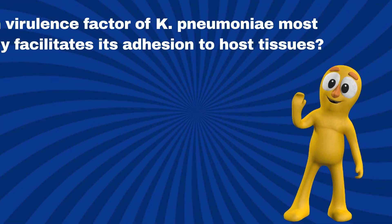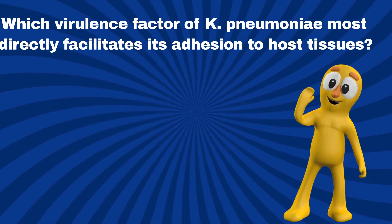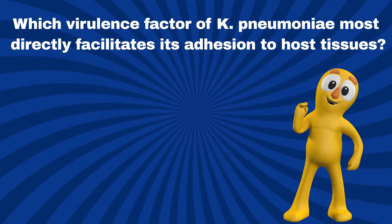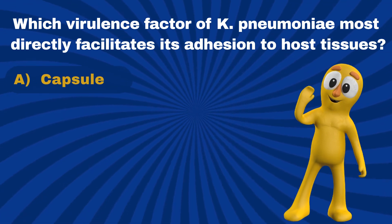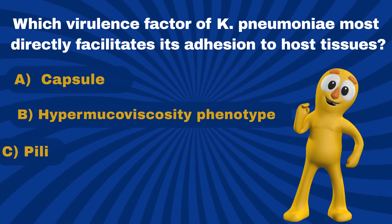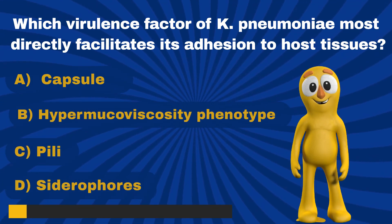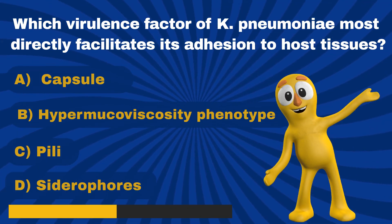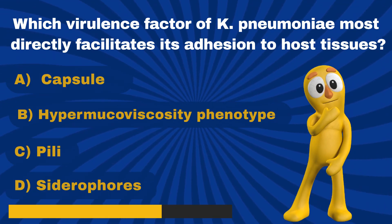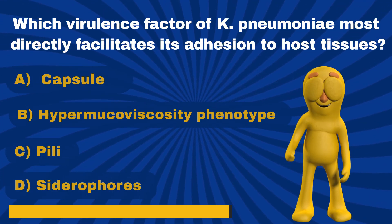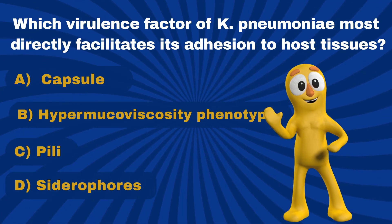Question 8. Which virulence factor of Klebsiella pneumoniae most directly facilitates its adhesion to host tissues? A. Capsule. B. Hypermucoviscosity phenotype. C. Pili. D. Siderophores. Correct. It is C — Pili.